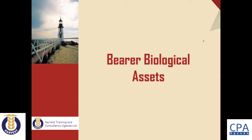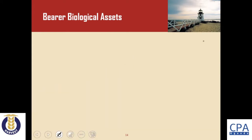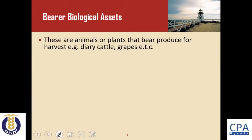Agricultural produce is harvested from biological assets. There are assets called bearer biological assets — these are animals or plants that bear produce for harvest. Examples include dairy cattle and grapevines. Bearer biological assets are those that give us the agricultural produce.